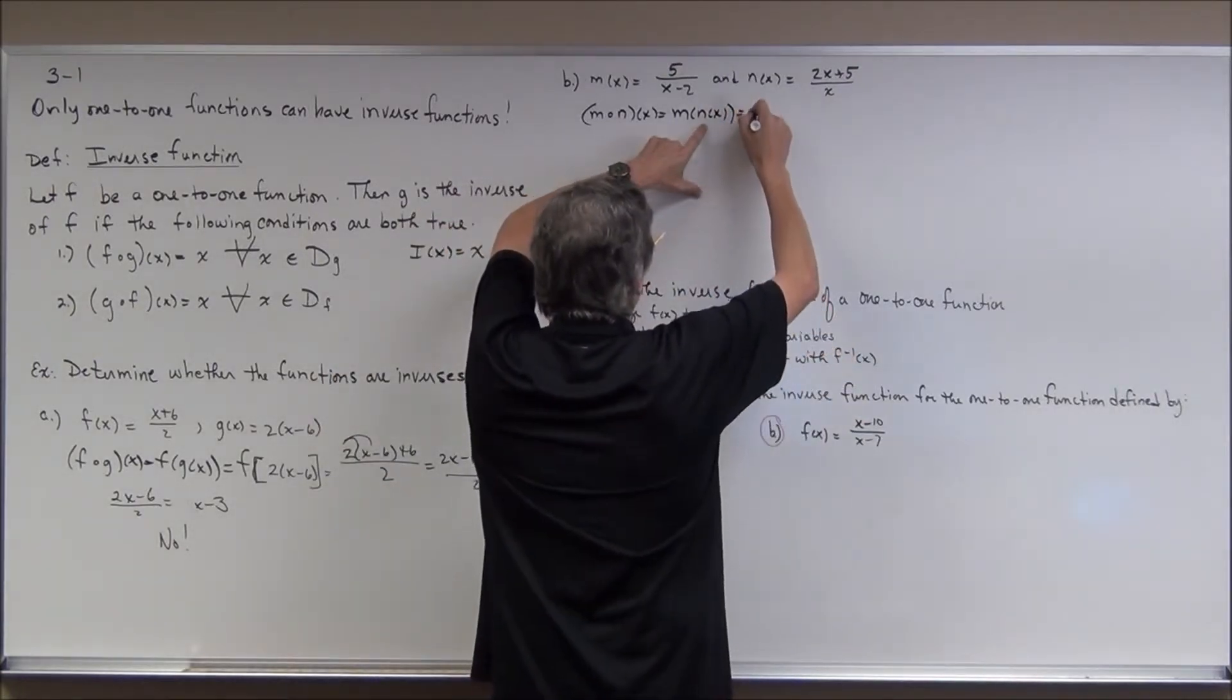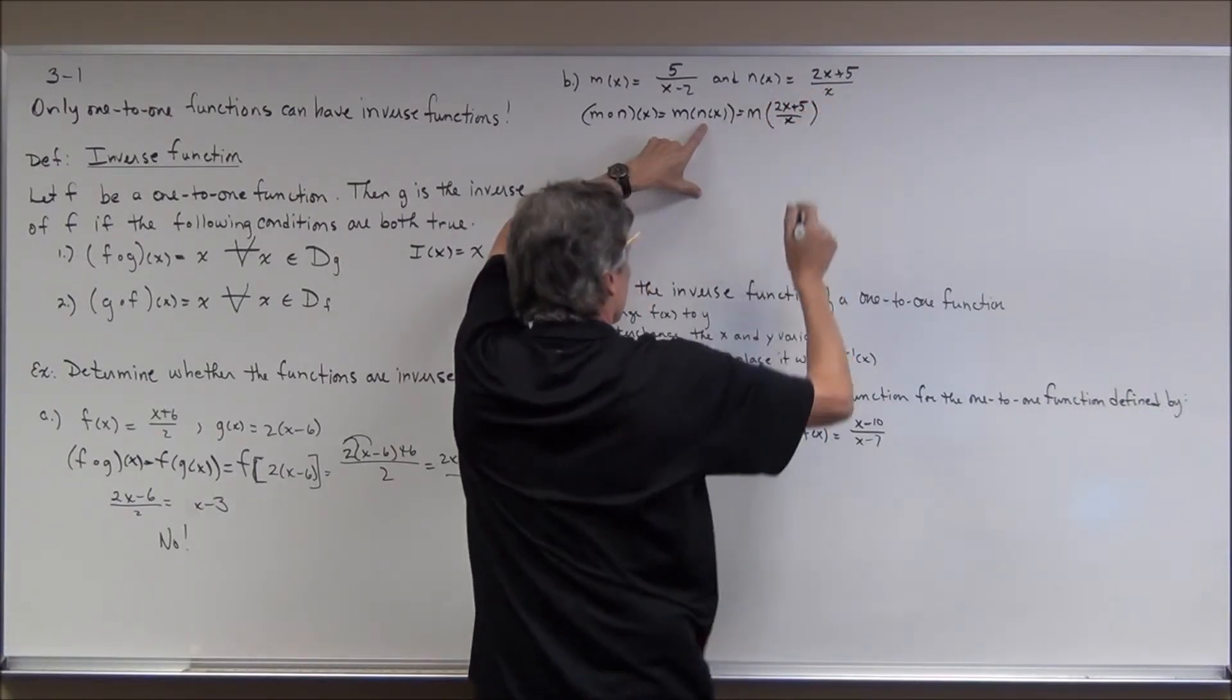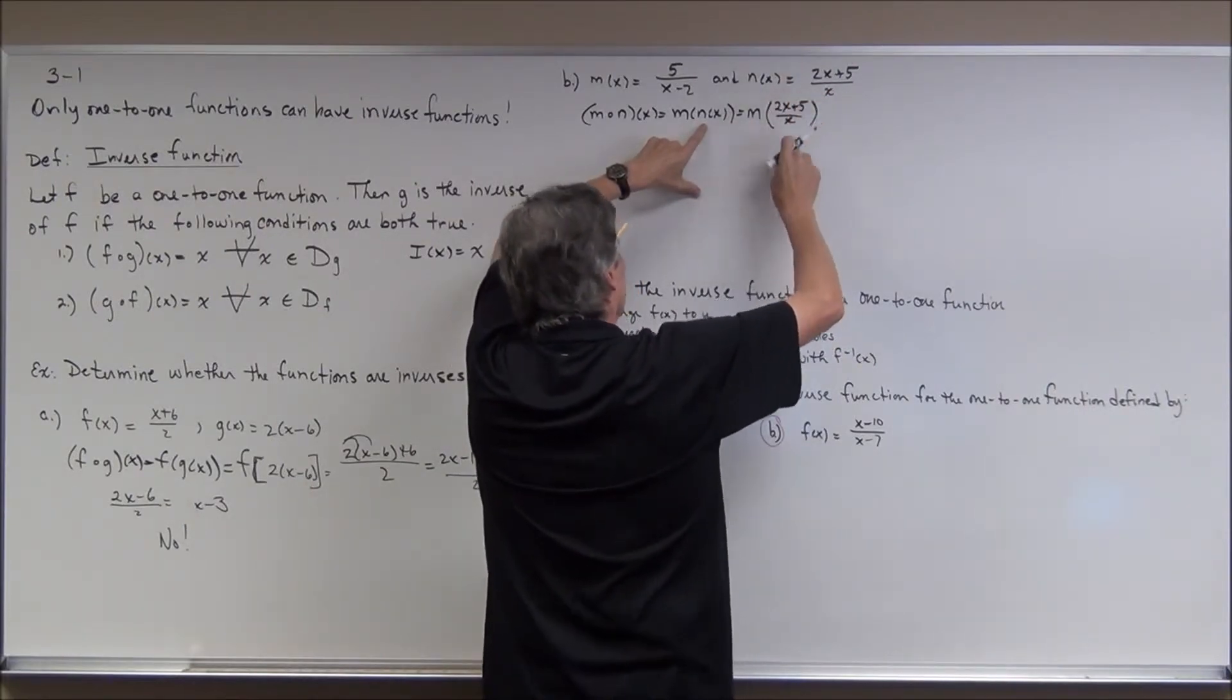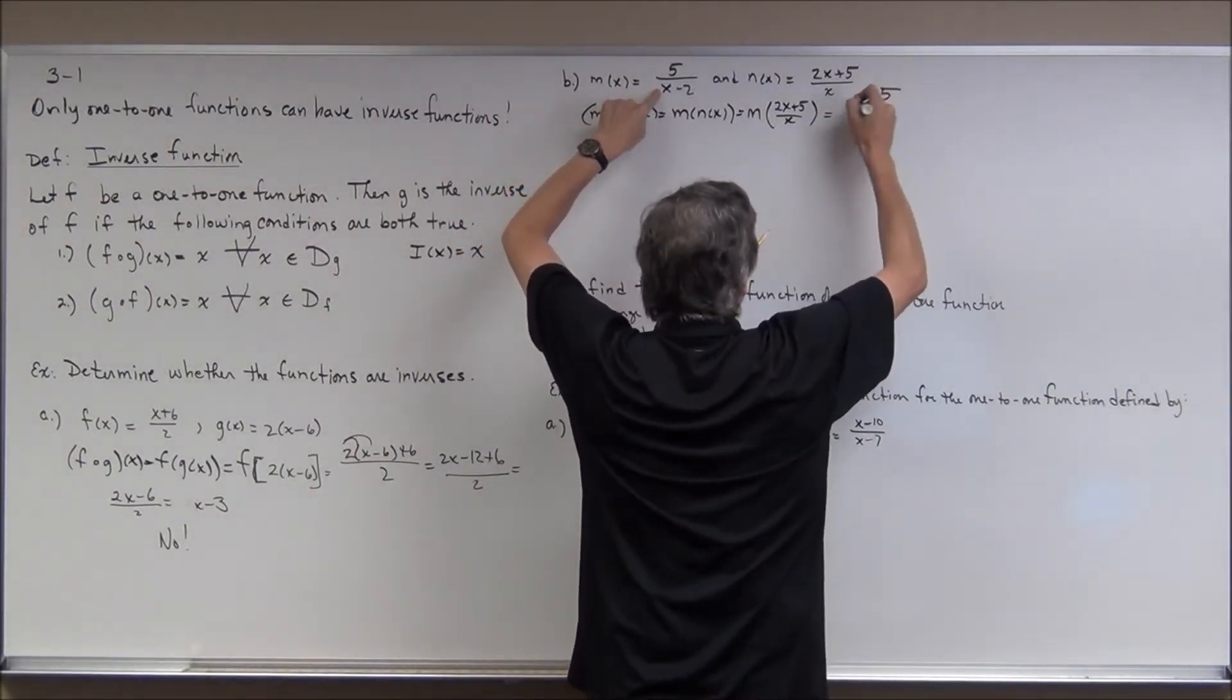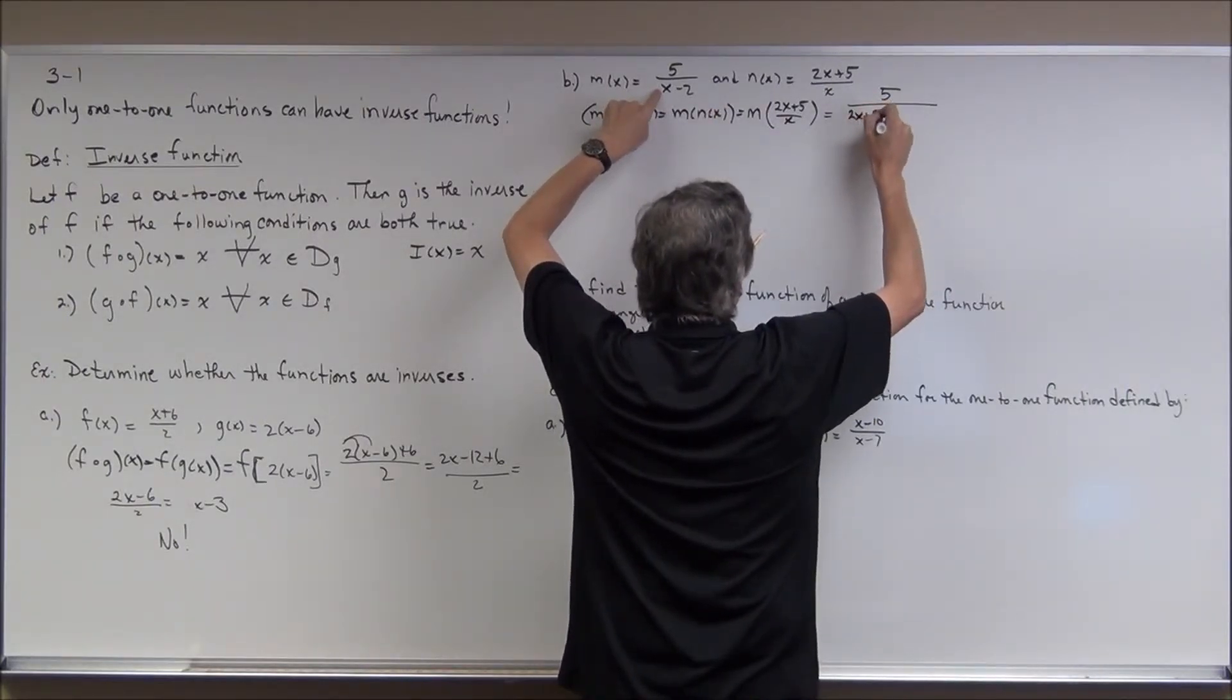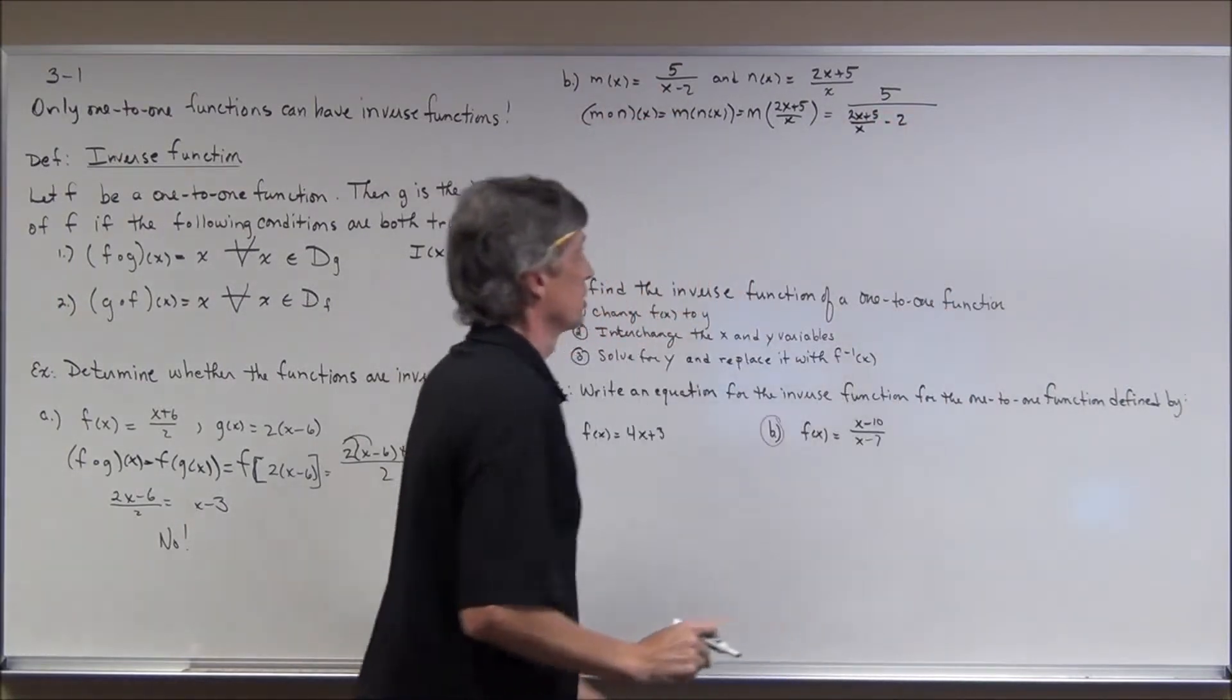So let's see, n of x is the quantity 2x plus 5 all over x. Okay. And now I'm going to take m of this. So I have to plug all of this into the variable right here in the rule for m. So that would be 5 all over this expression, which is 2x plus 5 all over x minus 2. What a mess this is looking like.